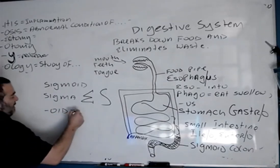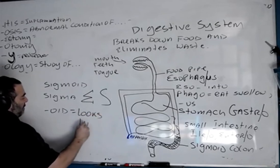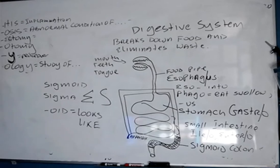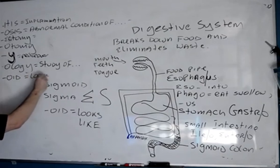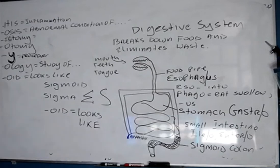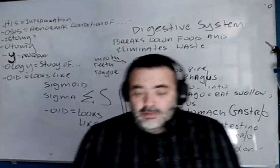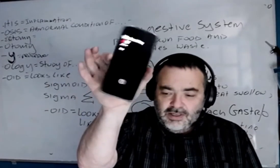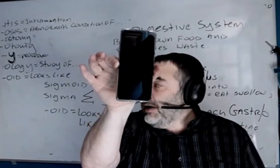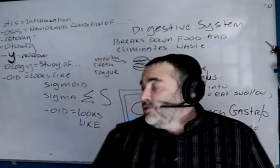The suffix -oid means 'looks like.' Do you know any words that end with -oid? Here's one: steroid. And here's another — android. Why the hell did they call it android? What kind of person calls something android? Do you know the symbol for android? It's a little green guy — it kind of looks like a small robot figure.